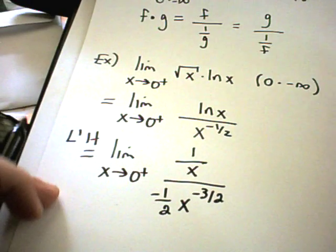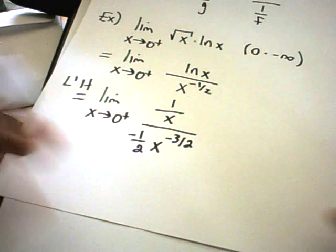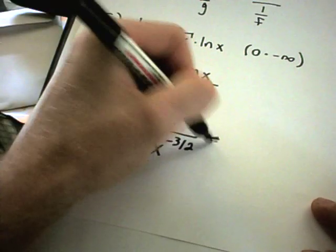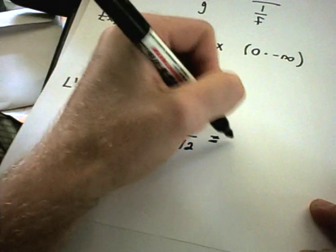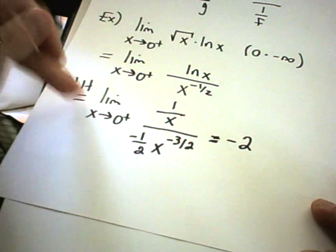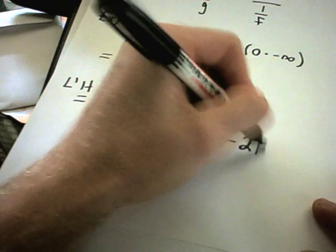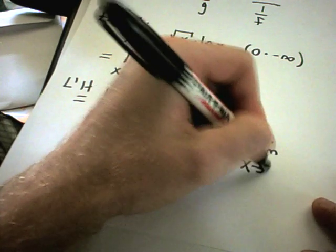And now I'm going to do some algebra to clean this up. So I could pull the negative 1/2 out front as a negative 2 when I flip it and multiply it. I have the limit as x approaches 0 from the right.